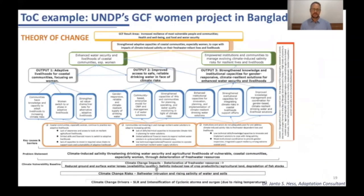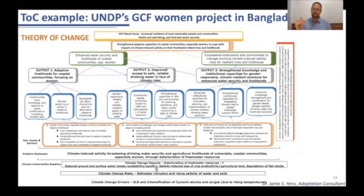This is a complete theory of change — I think it's probably the second or third version, not the final one from the project proposal document. It went through a range of different revisions. I show you this version because it also clearly links back to the impact chain discussed earlier. At the bottom there is a clear differentiation between the different climate change drivers, risk, and impacts. This project really only related to two different climate change drivers: sea level rise on one side, and an intensification of cyclonic storms and surges.